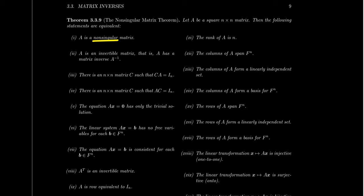Some other conditions related to that: the column vectors of A are going to have to be linearly independent. And if the column vectors are linearly independent, they actually form a basis for the column space. Because of the independence, the dimension of the column space — which is its rank — if you have a pivot in each column, the rank is going to have to be n. And if the rank is n, that means the column space, which is spanned by the columns of A, spans the entire n-dimensional space fn. So the columns of A span fn and are a basis for fn.